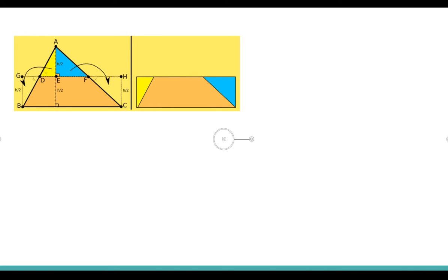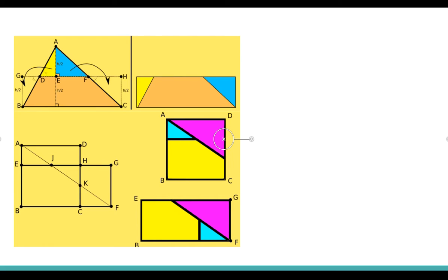First, I'll talk about how to transform a triangle into a rectangle of the same size. Then I'm going to talk about how to transform a rectangle into a square of the same size. And last, I'll talk about how to transform two different squares into each other.